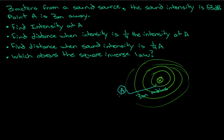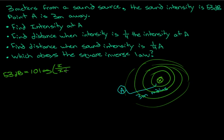In the last video I talked about the difference between intensity and sound intensity. So if we have a sound intensity, then using the decibel formula: 53 decibels equals 10 log of the intensity over the threshold intensity I-naught. Knowing the threshold intensity, we can solve for the current intensity at point A.